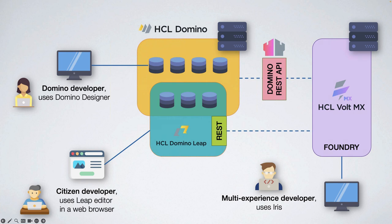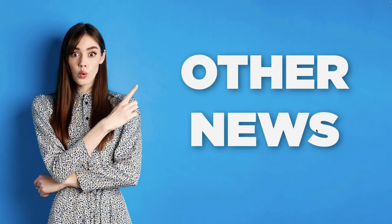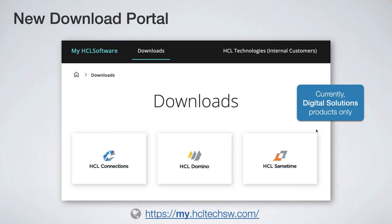This concludes the main part — what is new in digital solutions products, what happened during summer since April or May. Even though it was vacation time, we had a lot of updates. Now let's move to things that could be interesting to you but are not specifically related to the latest version of Nomad or Verse. Let's move to other news from summer. First one is a reminder: if you download the early access version of Domino version 14.